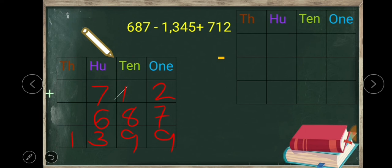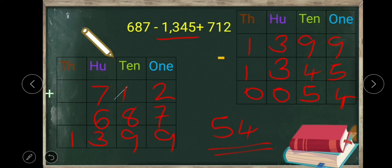Next, we subtract the number with the subtraction symbol from the total. The total is one thousand three hundred and ninety nine. From this total we subtract one thousand three hundred and forty five. Nine minus five is four, nine minus four is five, three minus three is zero, one minus one is zero. So the answer is fifty four.